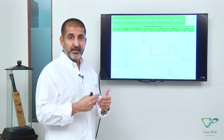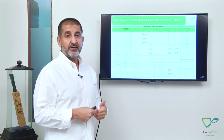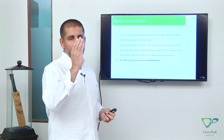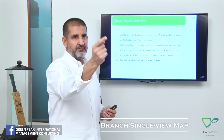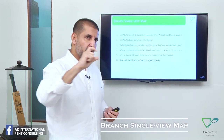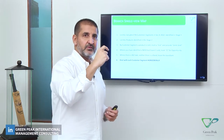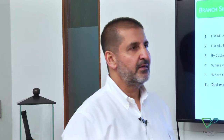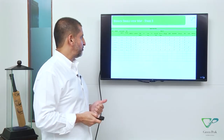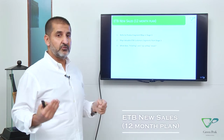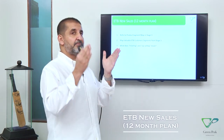Then you will move on to the next stage: the single view map. This means you have a single view of every customer across all products and services — you can see what products and services a customer has bought from you. When compiled into segments, you get a summary and identify opportunities. In ETB, you are looking to do two things: cross-sell and up-sell.